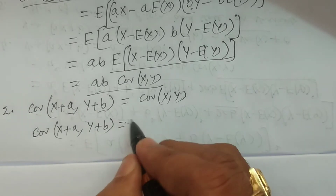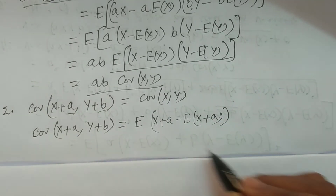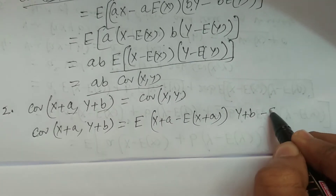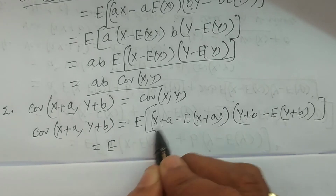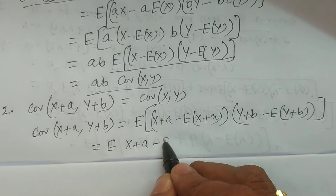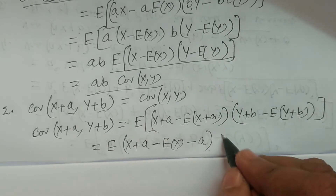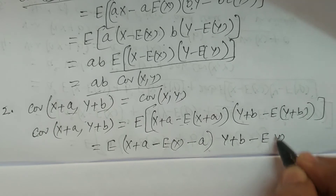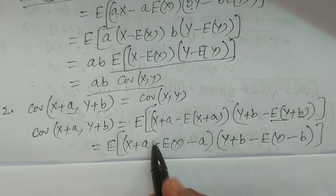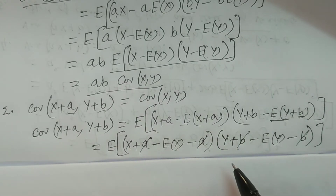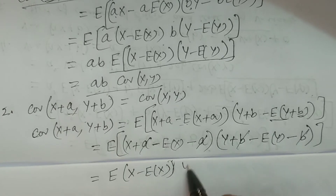Covariance of (x plus a) and (y plus b) can be expressed using the formula: expectation of [(x plus a) minus expectation of (x plus a)] times [(y plus b) minus expectation of (y plus b)]. Expanding: expectation of a is a, so x plus a minus expectation of x minus a. Similarly, y plus b minus expectation of y minus b. The a minus a cancels and b minus b cancels.